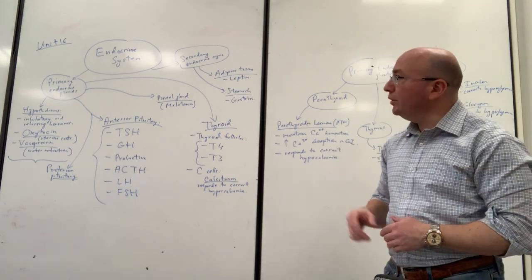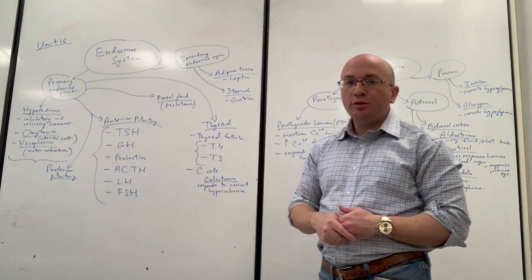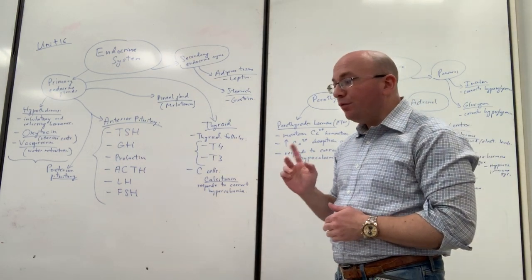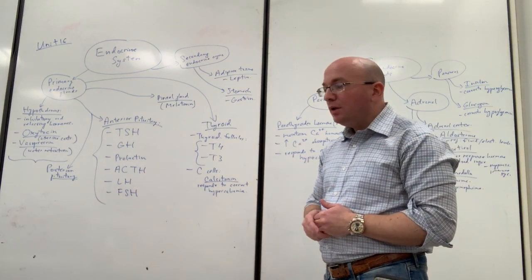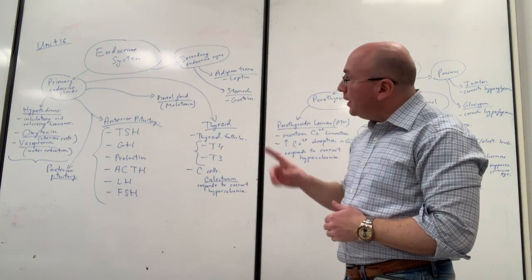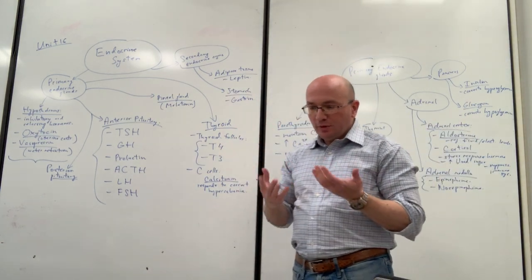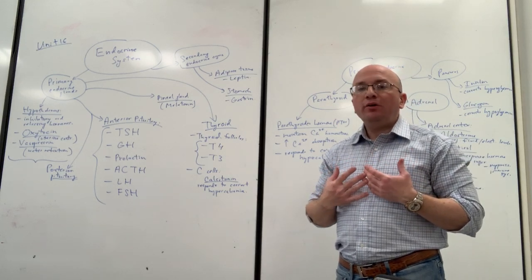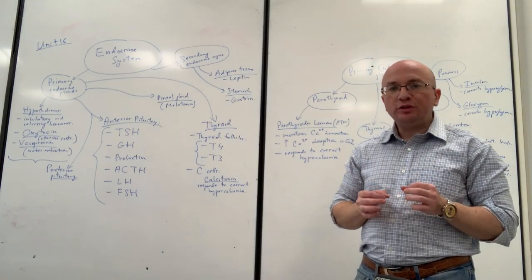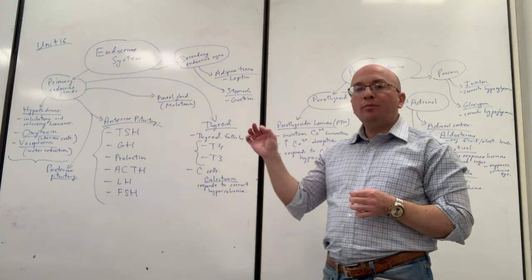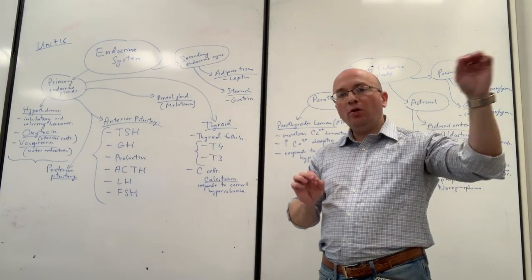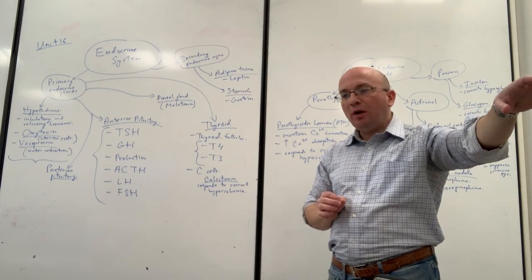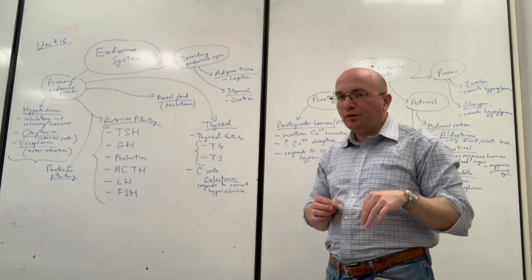Welcome to the lecture on the endocrine system in Unit 16 of the laboratory manual for anatomy and physiology. In the endocrine system we're essentially talking about the glands and other organs throughout the body that release small messengers called hormones — molecules released from one cell, entering the bloodstream, and traveling long distances to target tissues to have their effect.